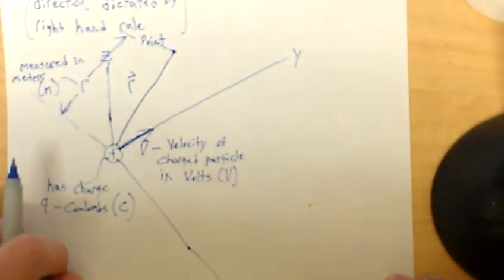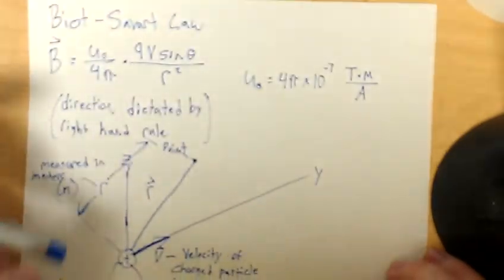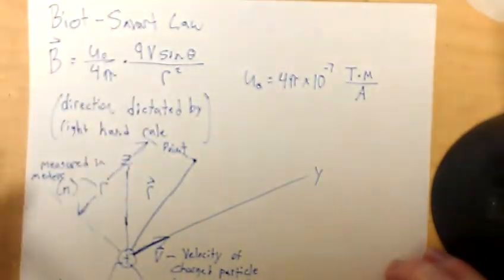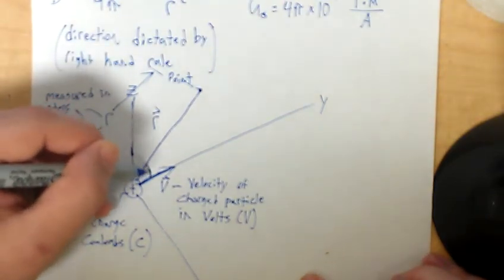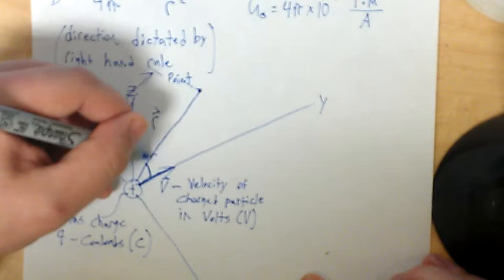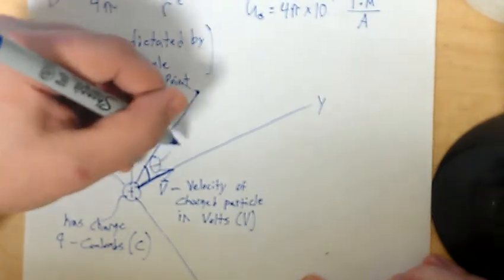And the angle that we need for the formula, that comes from the angle between the velocity vector and the R vector. And that's given in degrees.